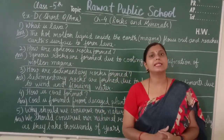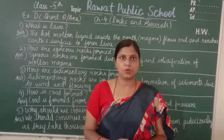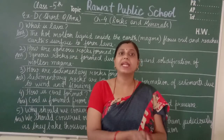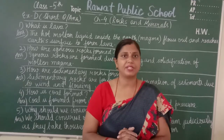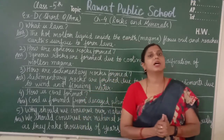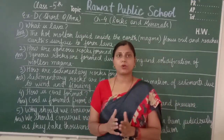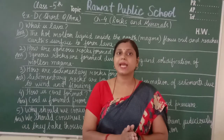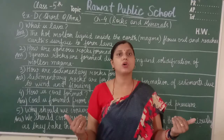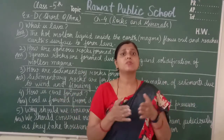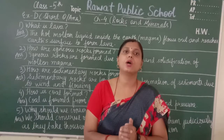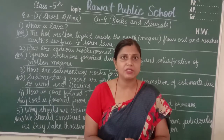Question number one is: what is lava? The hot molten liquid found inside the earth is called magma, and when it flows out and reaches the surface of the earth, that liquid is called lava. When lava comes out from the earth and flows out, it solidifies on cooling.